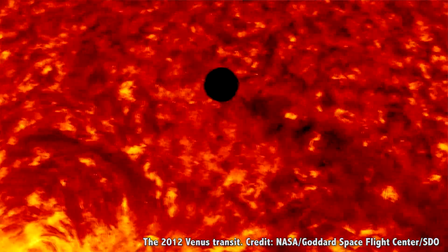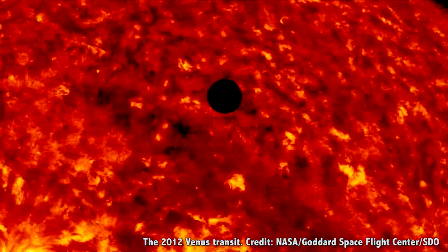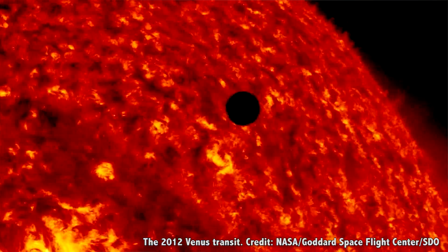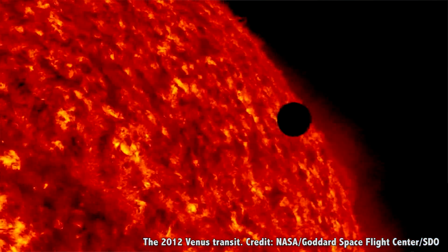When Venus passes directly in front of the Sun, that's a planetary transit. The last time it happened was back in 2012, and before that, 2004. Unfortunately, the next transit of Venus won't happen until 2117. Now, I'm sure I'll still be around, living it up in my robot body.